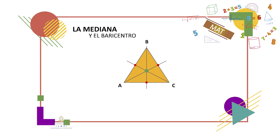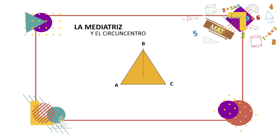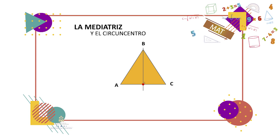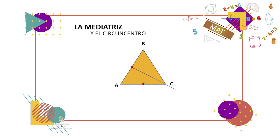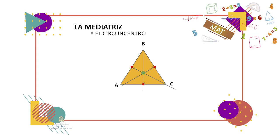A ese punto de intersección se le llama varicentro, centroide o centro de gravedad, y tiene muchas aplicaciones en la física, siendo uno de los puntos notables de un triángulo. La mediatriz es una recta de un triángulo que corta el segmento perpendicularmente en su punto medio. Comenzamos con el segmento comprendido entre los vértices A y B, identificamos su punto medio y luego trazamos una perpendicular en ese punto. Continuamos con el segmento comprendido entre los vértices B y C, identificamos su punto medio y luego trazamos la perpendicular en ese punto. Las mediatrices se han intersectado en un punto.